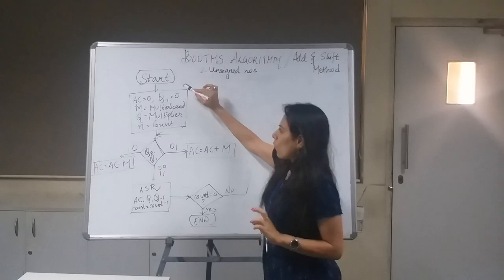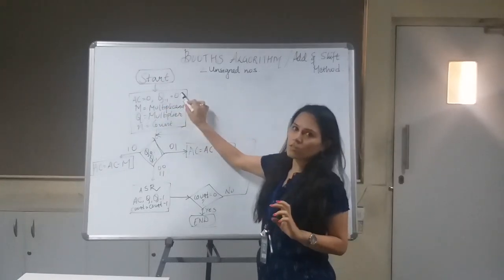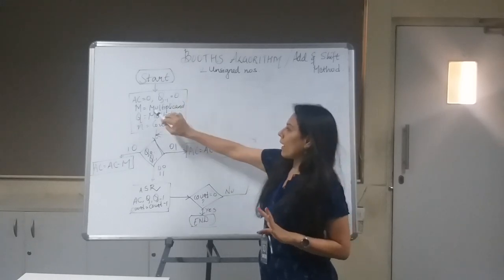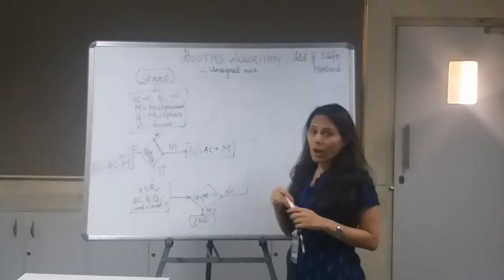What we do here is AC, Q0, Q-1, we initialize it to zero. Then M is the multiplicand, Q is my multiplier, and N is the count.